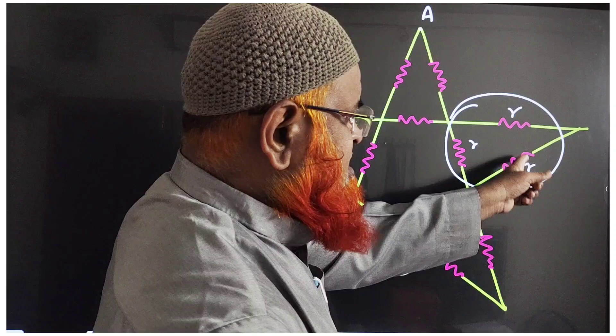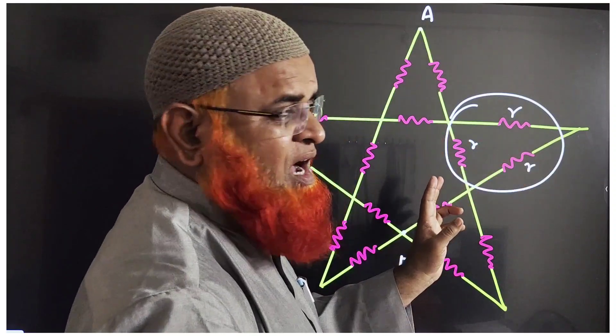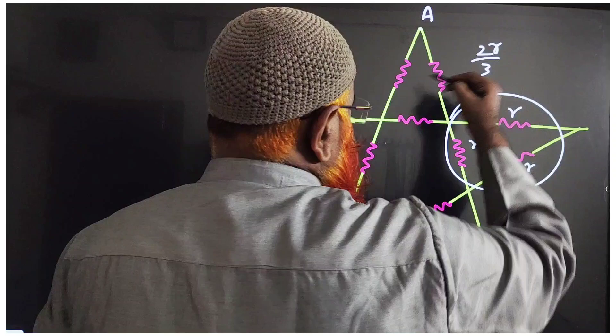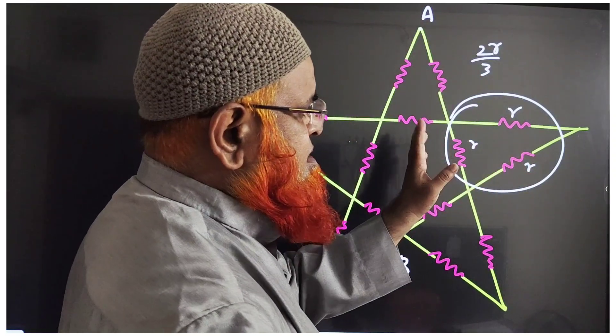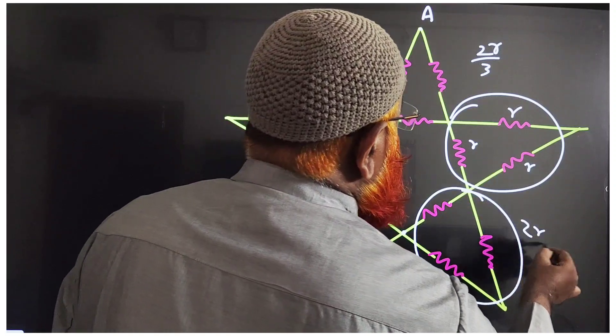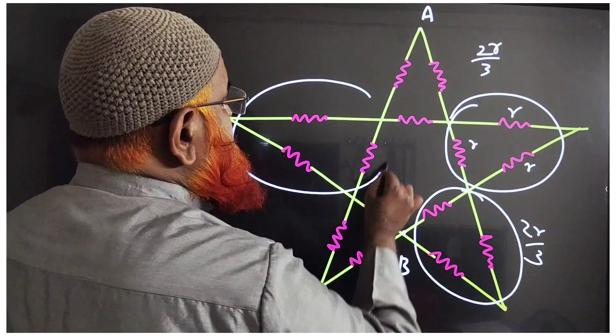These two are in series: 2r times r divided by 2r plus r equals 2r by 3. Using the formula r1 times r2 divided by r1 plus r2, we get 2r by 3. Similarly, this is also going to be 2r by 3.